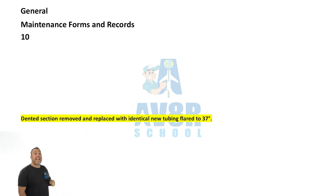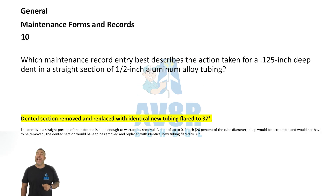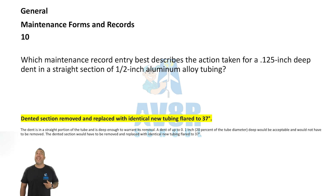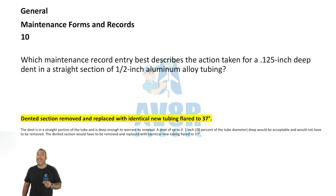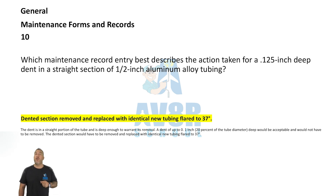Number ten: The correct maintenance record entry for a dented tubing repair is: 'Dented section removed and replaced with identical new tubing flared at 37 degrees.'